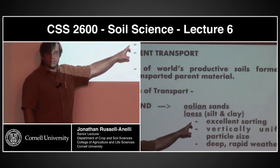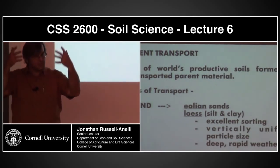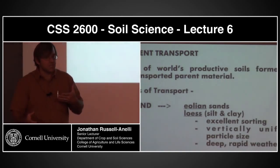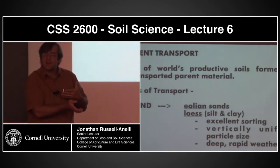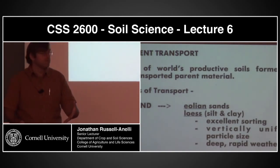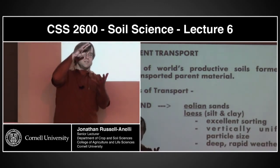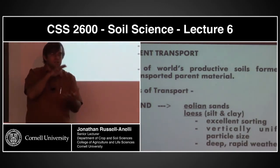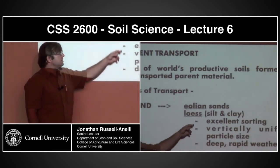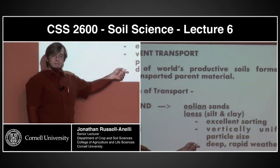The important thing about loess material is that excellent sorting works two ways. We always think of it as sorting the dust and putting the silt on top, but at the same time it's also sorting out the parent material from which it came — selectively picking the silt out means everything else is being left behind. Vertical uniform particle size comes down as large components. The wind is uniform energy, so you get large vertical depths and also deep, rapid weathering. If I have small particles with a lot of surface area exposed, it's going to weather very quickly.